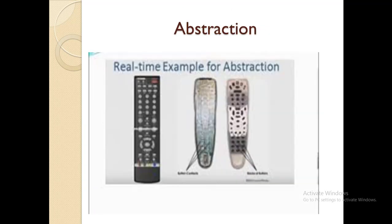Another example of abstraction is a remote control. On the remote control, there are different buttons — a play button, when you press it a video plays on the TV; a stop button, when you press it the movie stops. There are many more features on the remote, but what is the functionality behind it, a normal user never knows. All the complexities and functions are hidden from the user. This is known as abstraction.